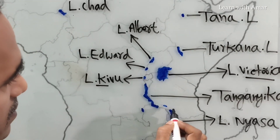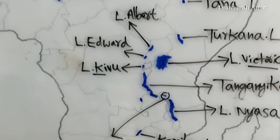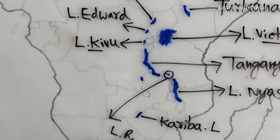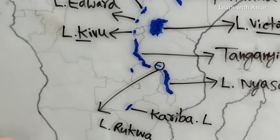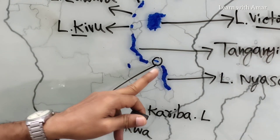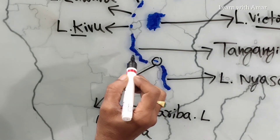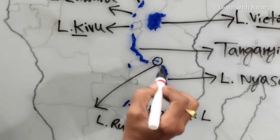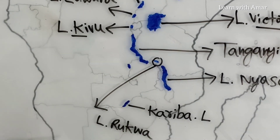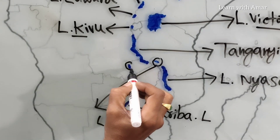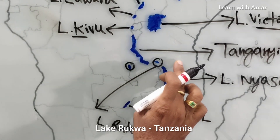These small lakes are: this one is known as Lake Rukwa. Historically, Lake Rukwa acted as a link between Lake Tanganyika and Lake Nyasa. Lake Rukwa is located in one country — Tanzania.